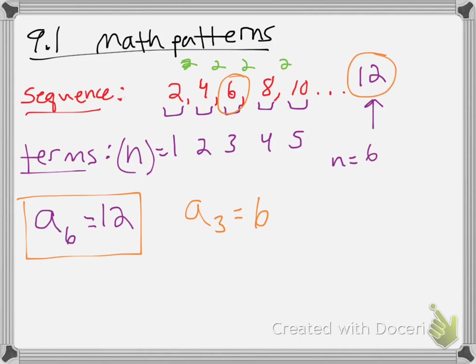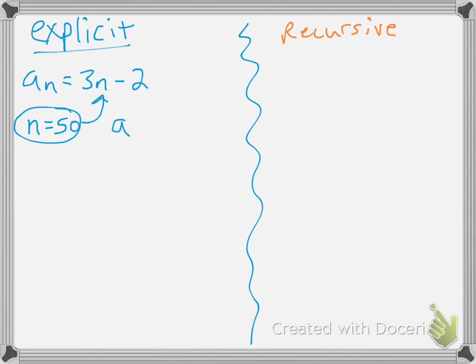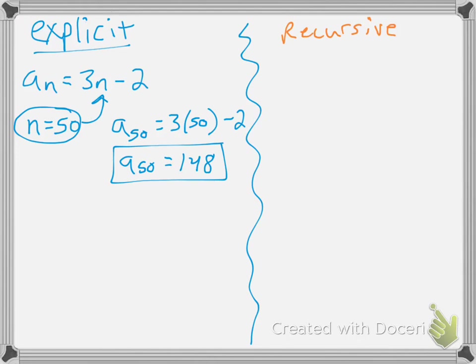There are two main types of formulas to express a sequence: explicit and recursive. Explicit formulas are great because they are based off of n itself. Here's an example: 3n minus 2. The reason explicit formulas are awesome is because all you have to do is substitute the desired term in for n. For example, the amount of the 50th term equals 3 times 50 minus 2, which is 150 minus 2 — the amount of the 50th term is 148.